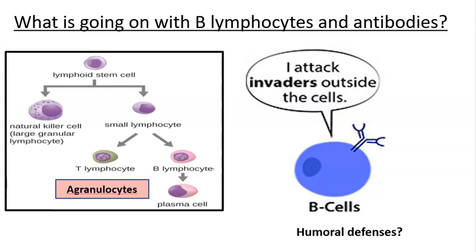We've seen the process of lymphocyte development and maturation, with mature lymphocytes floating around in circulation and embedded in structures like lymph nodes. T cells include cytotoxic ones that directly destroy infected or cancerous cells, and helper T cells that release cytokines to boost white blood cell activity and humoral immunity via antibodies produced from plasma cells derived from activated B lymphocytes.